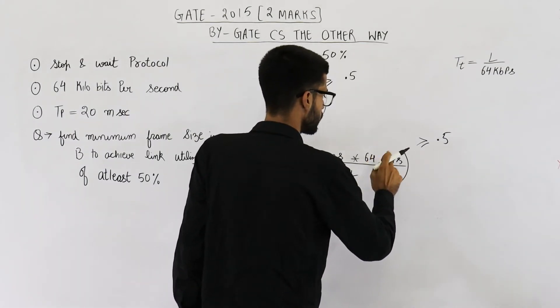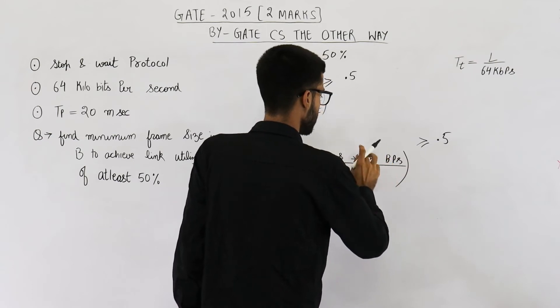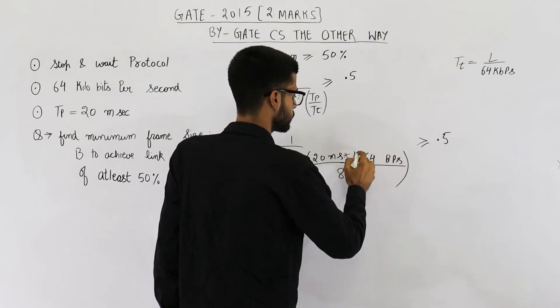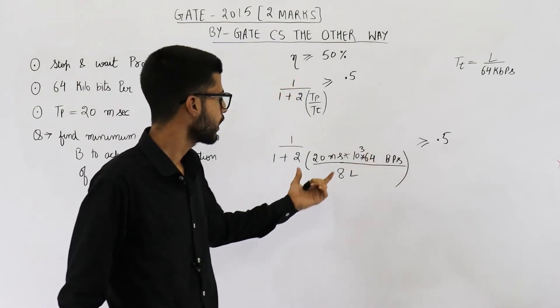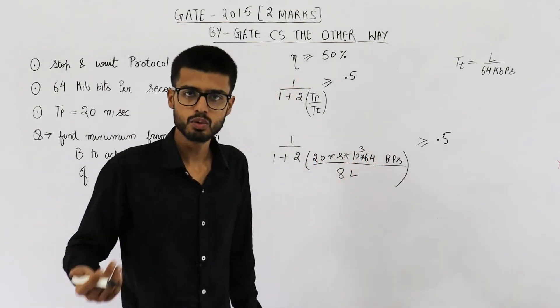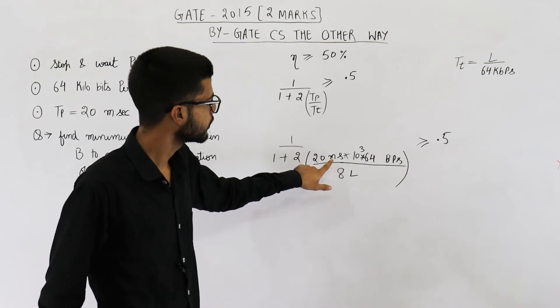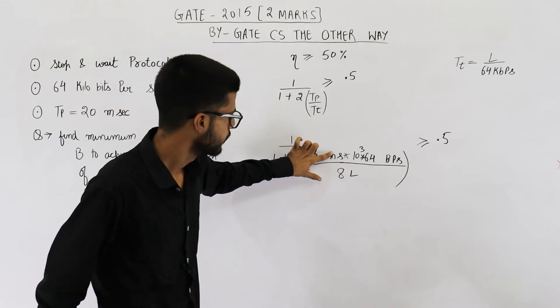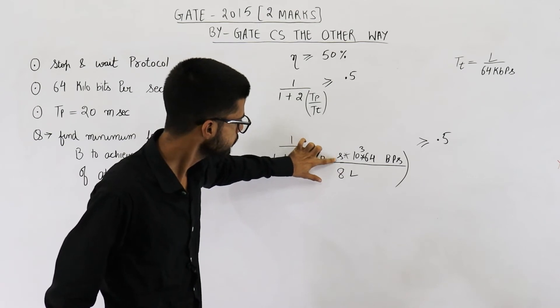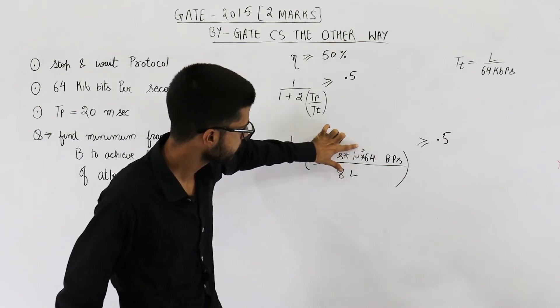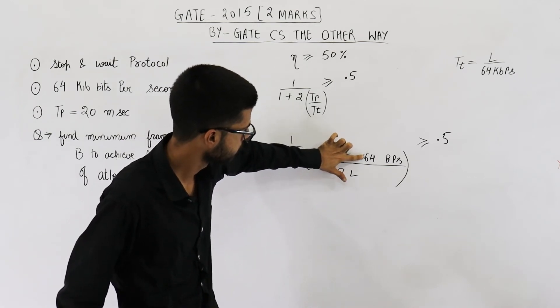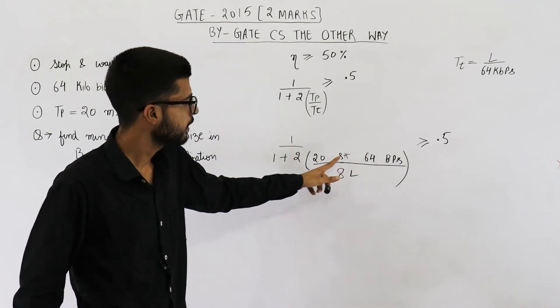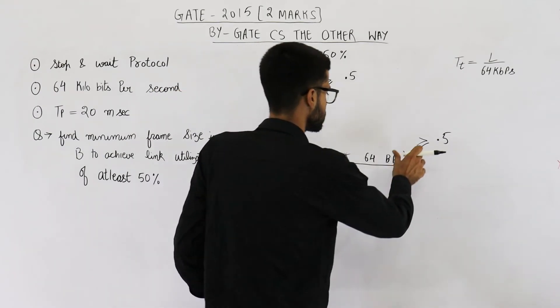So it is 64 into 10 raised to the power 3. So I'm writing it here. Now if you try to convert this millisecond into seconds then value of m will be 10 raised to the power minus 3. So m and this 10 raised to the power 3 will be cancelled. Second and per second will also get cancelled.